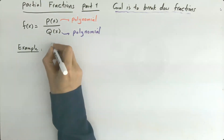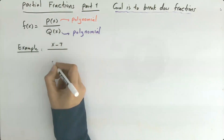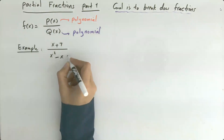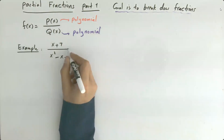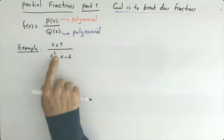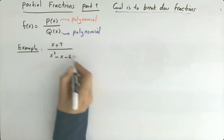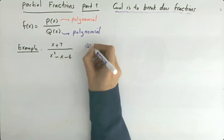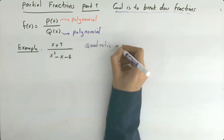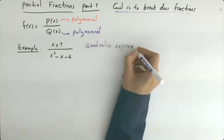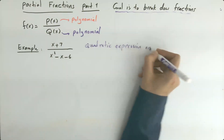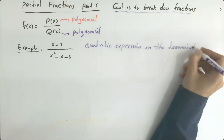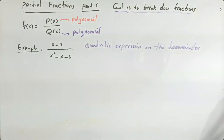Here we have x plus 7 divided by x squared minus x minus 6. This is the case where you have a quadratic expression on the denominator. So let us begin.